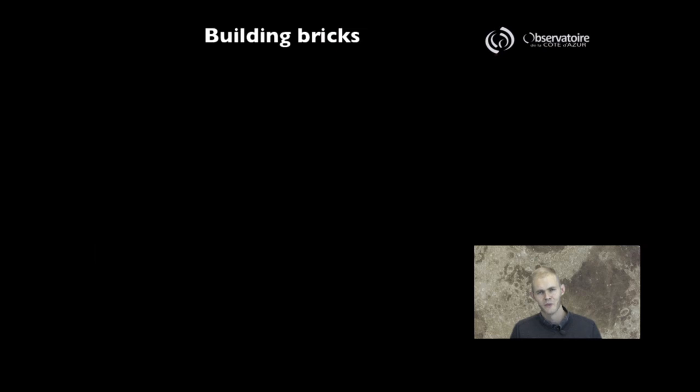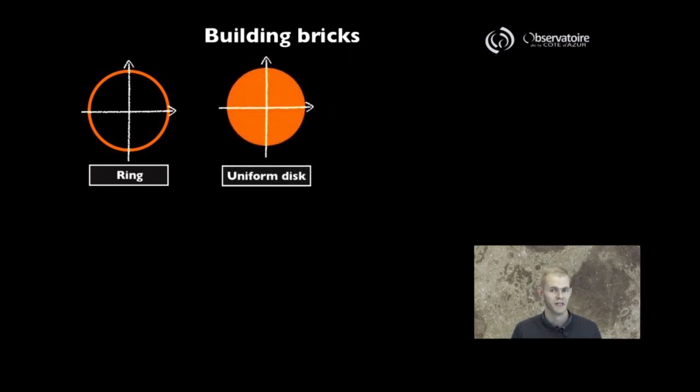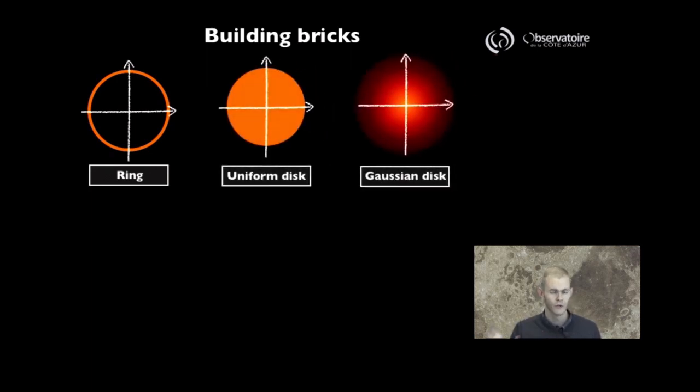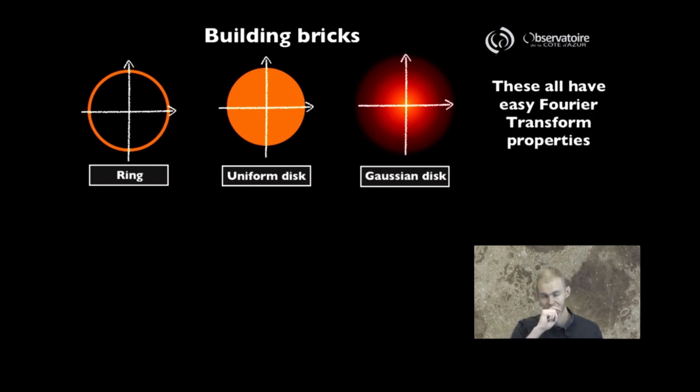I think with the objects we've just introduced, the ring, the uniform disk, and this Gaussian profile, we actually have some very good building blocks that we are going to be able to use later on. The reason why these are very interesting is because they all three have some very nice and very easy Fourier transform properties.